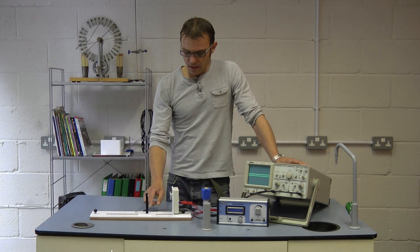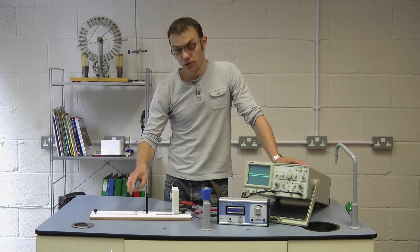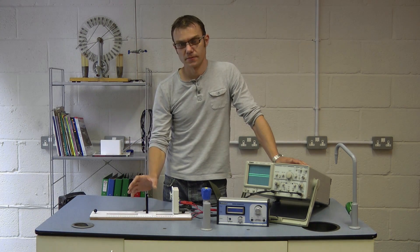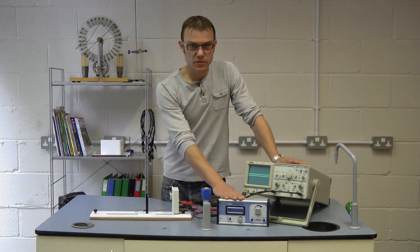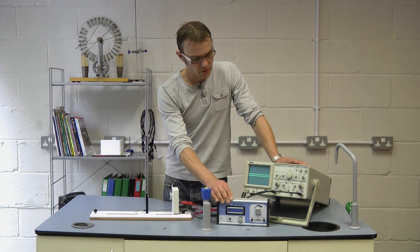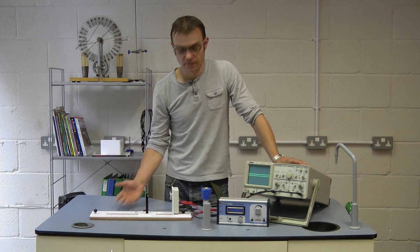What we're going to do here is we are going to measure the distance between two consecutive compressions. That's going to give us our wavelength of sound and we know the frequency that's applied from our signal generator. If we've got a frequency and we've got a wavelength we can then calculate the velocity of sound.